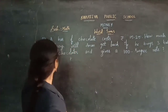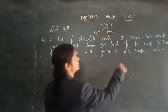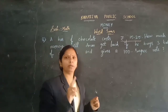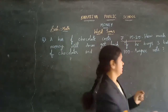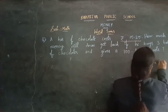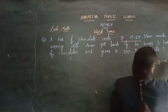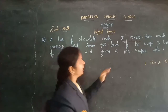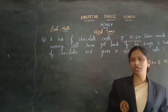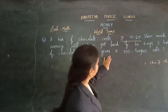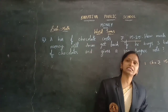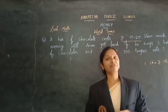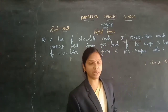Yes, let's do this problem here. A bar of chocolate costs 15 rupees 25 paise — so 1 chocolate bar cost is 15 rupees 25 paise. What they are asking: how much money will Amal get back if he buys 3 bars of chocolates and gives a 100 rupee note? He has given a 100 rupee note and purchased 3 chocolates. After giving the 100 rupees, how much will he get back — that amount we need to find.